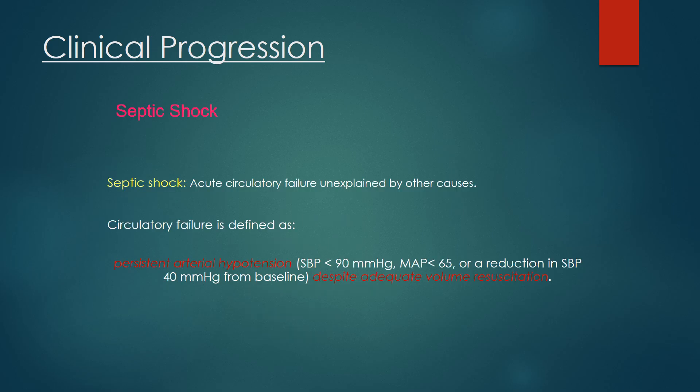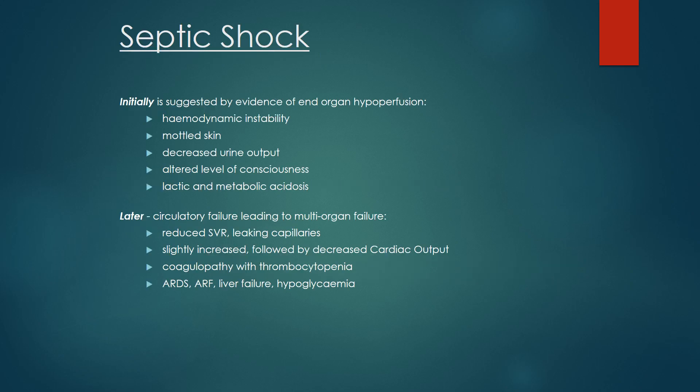Septic shock is an acute circulatory failure not explained by other causes, defined as persistent hypotension with systolic blood pressure less than 90 mmHg, or a reduction of 40 mmHg from baseline, despite adequate volume resuscitation. Initially septic shock is suggested by evidence of tissue hypoperfusion: hemodynamic instability, mottled skin, decreased urine output, altered level of consciousness, and lactic and metabolic acidosis.